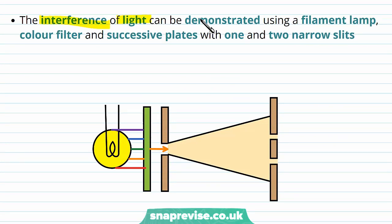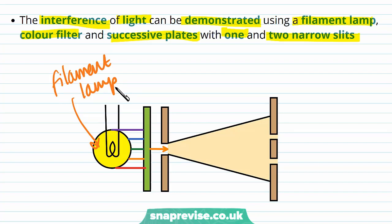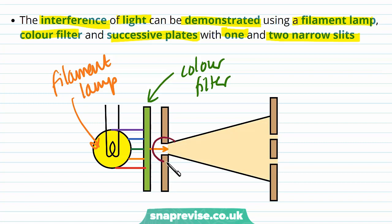The interference of light can be demonstrated using a filament lamp, colour filter, and successive plates with one and two narrow slits. This is the setup we can use to demonstrate that light can interfere. Our filament lamp produces white light, which means it produces lots of different colours of light together, and each colour has its own frequency.